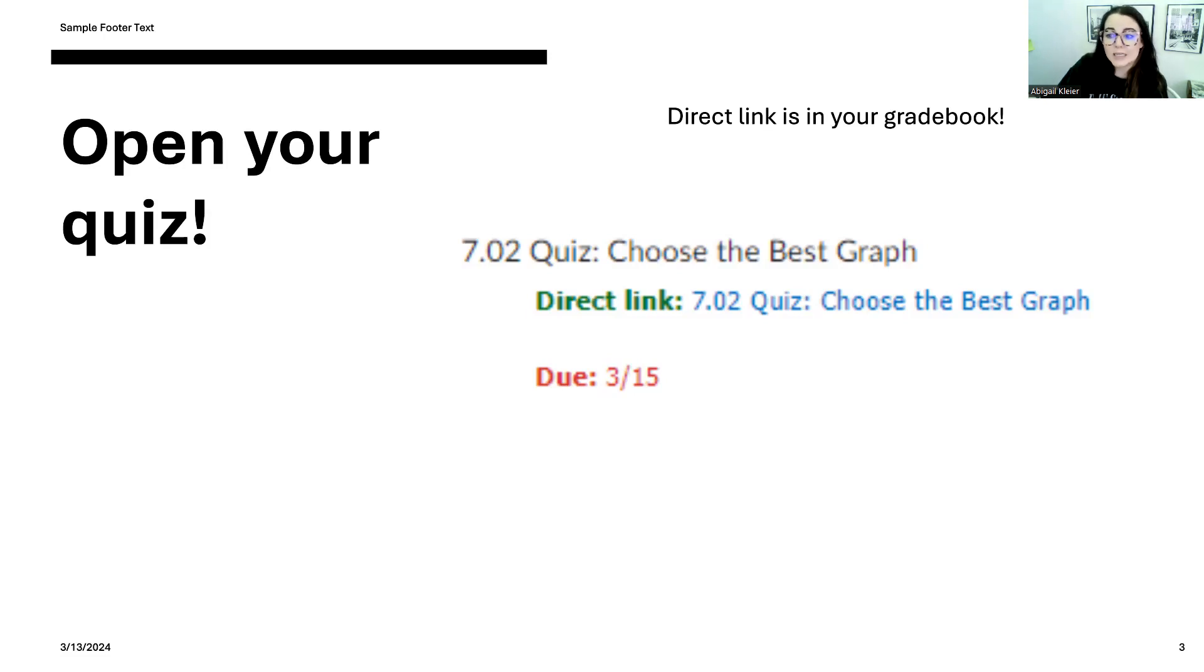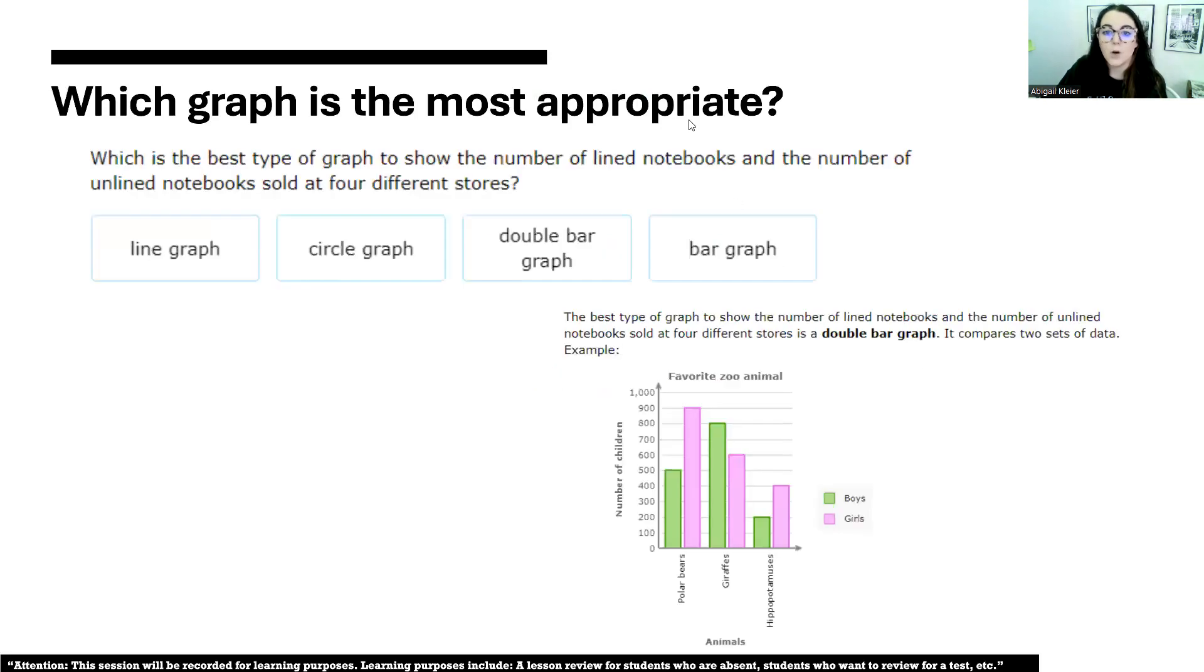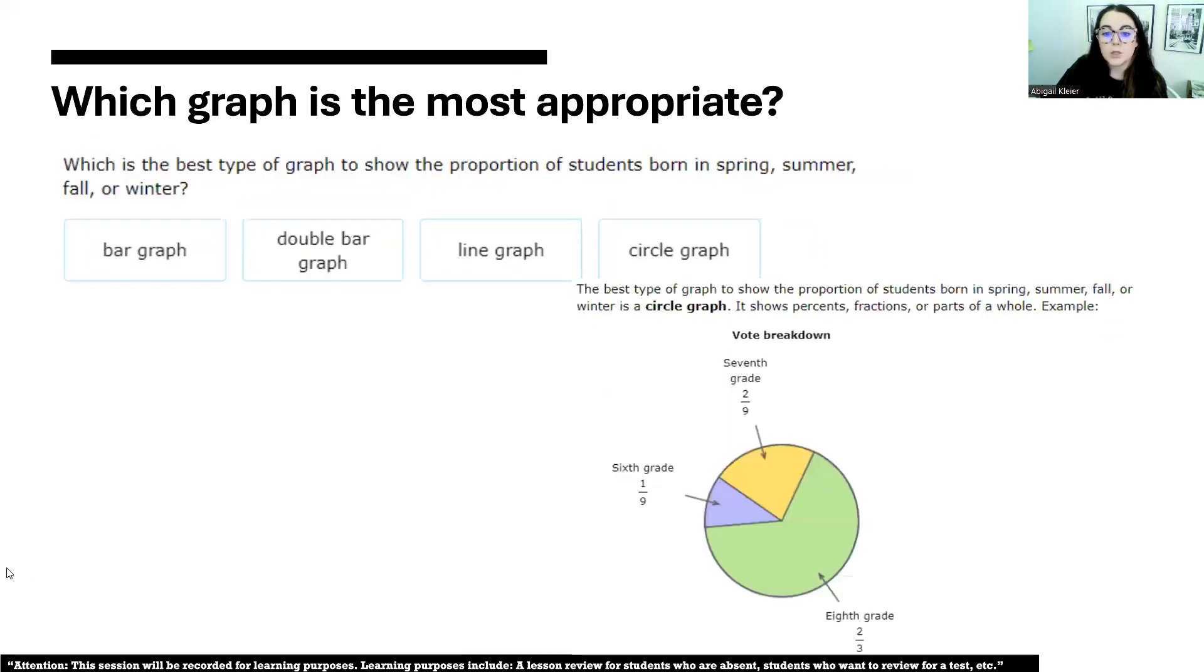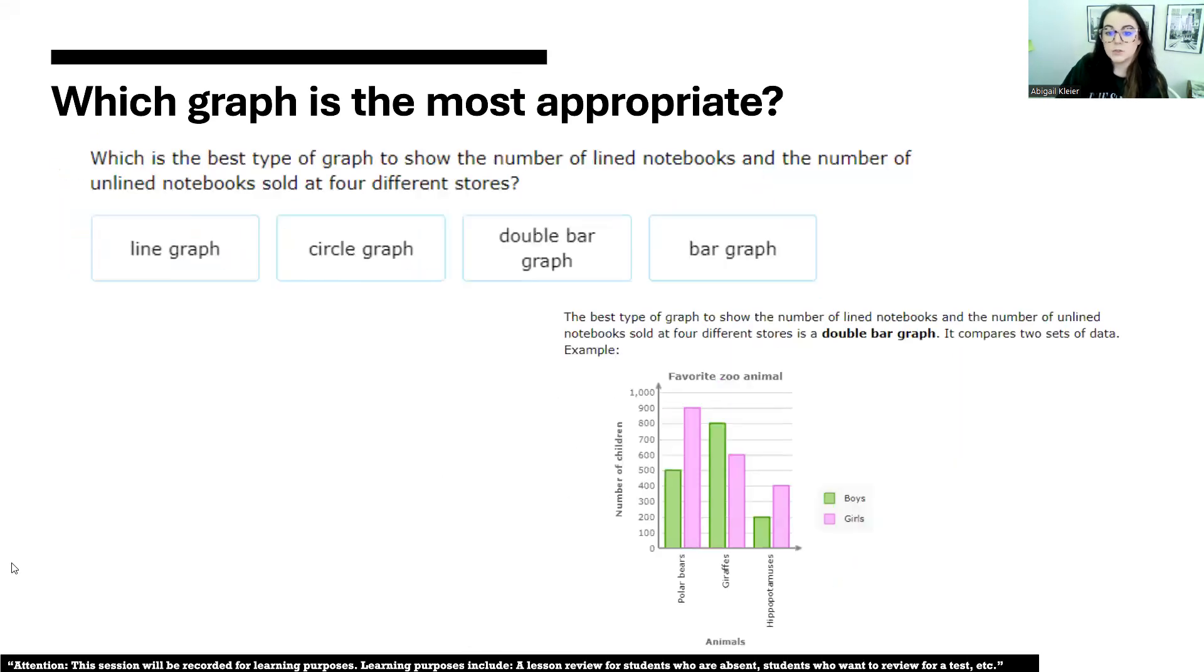For this quiz, it is not necessary to use a calculator, but as you guys know, you can use a calculator on any quiz. However, this one is not necessary because this is all about observation. We're not really doing a lot mathematically here. We are just going to be looking at different data sets, different scenarios, and then we're going to be choosing which graph is best.